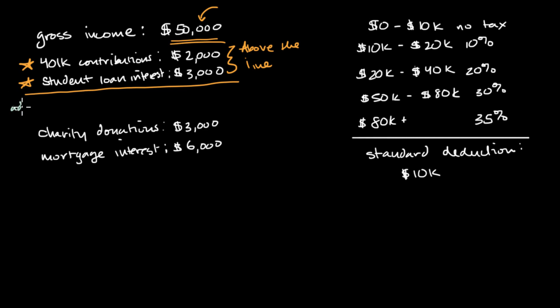Let me write it here. Adjusted gross income, which in this case is going to be $50,000 minus $2,000 minus $3,000. So that gets us to $45,000.